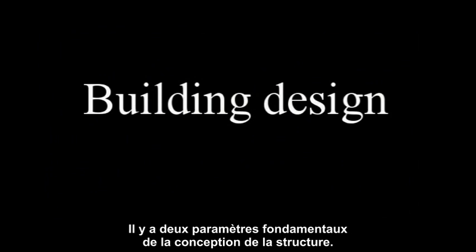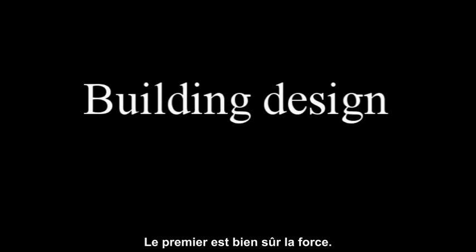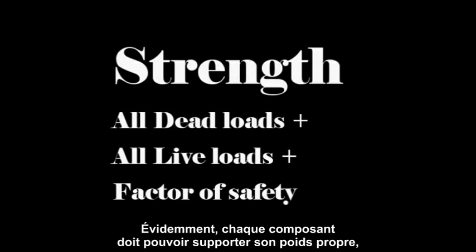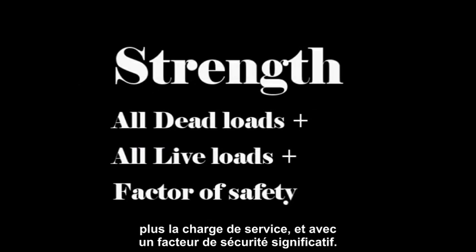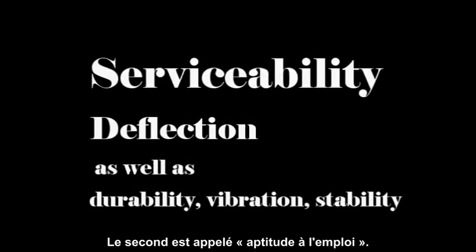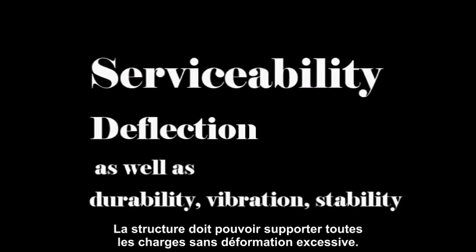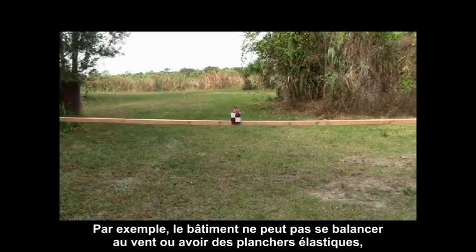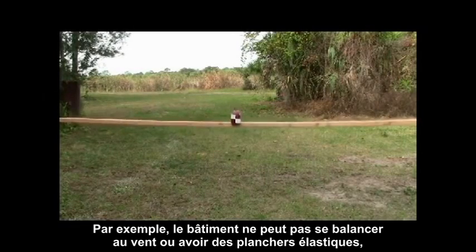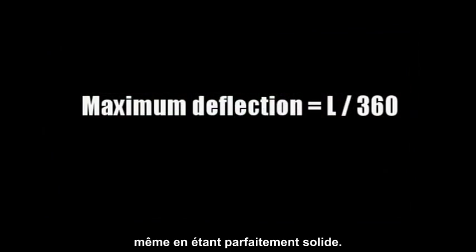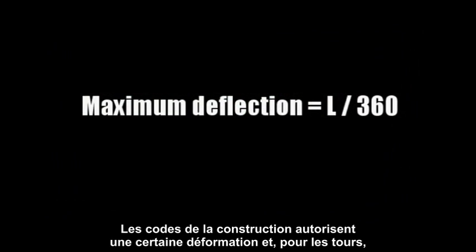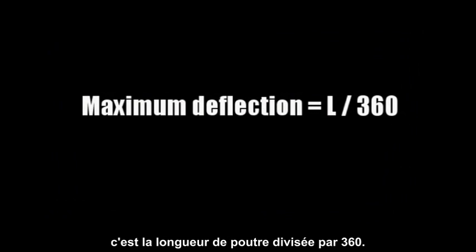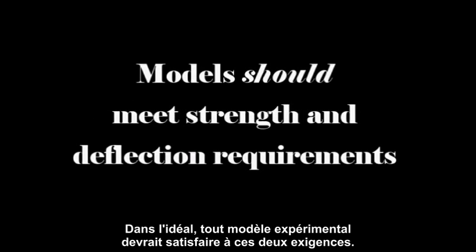There are two fundamental parameters of structural design. The first is strength — each component must be able to hold the dead load plus the live load plus a significant factor of safety. The second is serviceability: the structure must support all loads without excessive deflection. For example, the building can't sway in the wind or have bouncy floors, even if it's perfectly strong. Building codes have an allowable deflection, and for the towers it's the beam length divided by 360, or L over 360. Any experimental model should meet these two basic requirements.